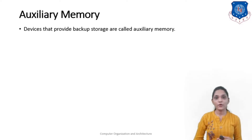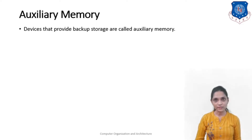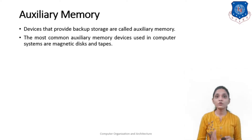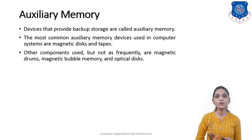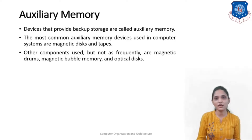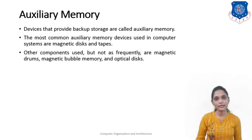The devices that provide backup storage are known as auxiliary memory. The most common auxiliary memory devices used in a computer system are magnetic discs and tapes. Other components used, but not as frequently, include magnetic drums, magnetic bubble memory, and optical discs. But mostly we use magnetic discs or magnetic tapes.